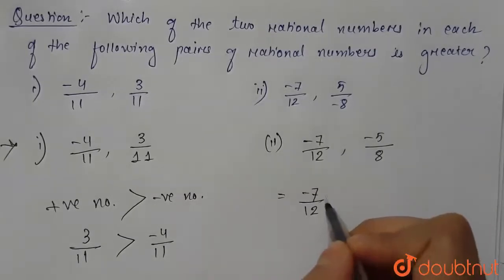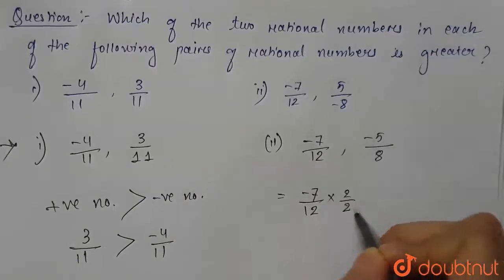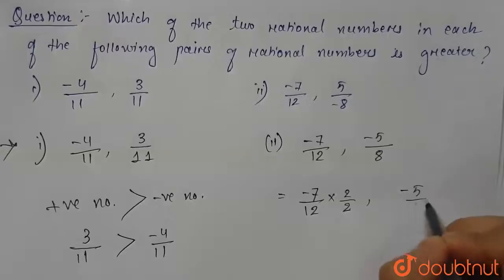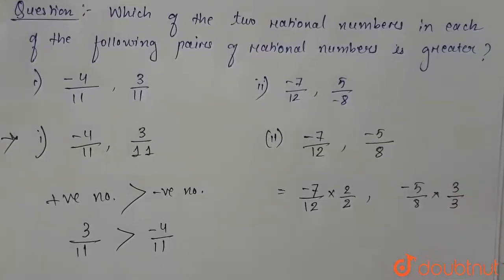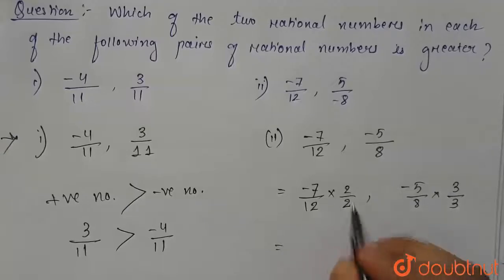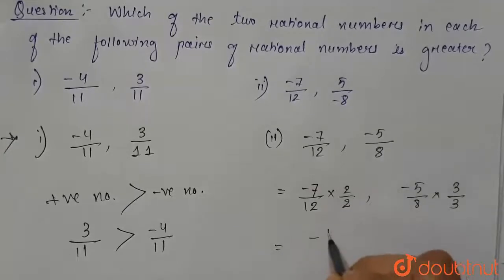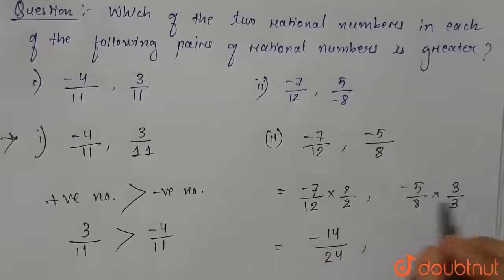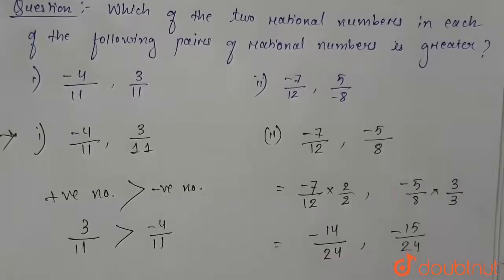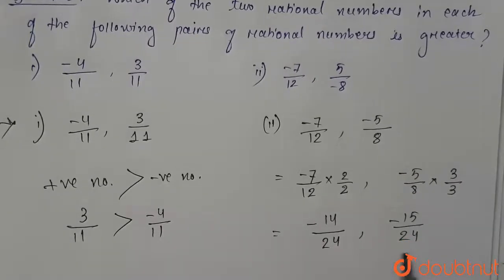Let's multiply -7/12 by 2/2 and let's multiply -5/8 by 3/3. From here we get 7 into 2 is, and here is a minus, so -14 divided by 24, and here we get -15 divided by 24. Now we have equated the denominators, now we will compare only based on the numerators.